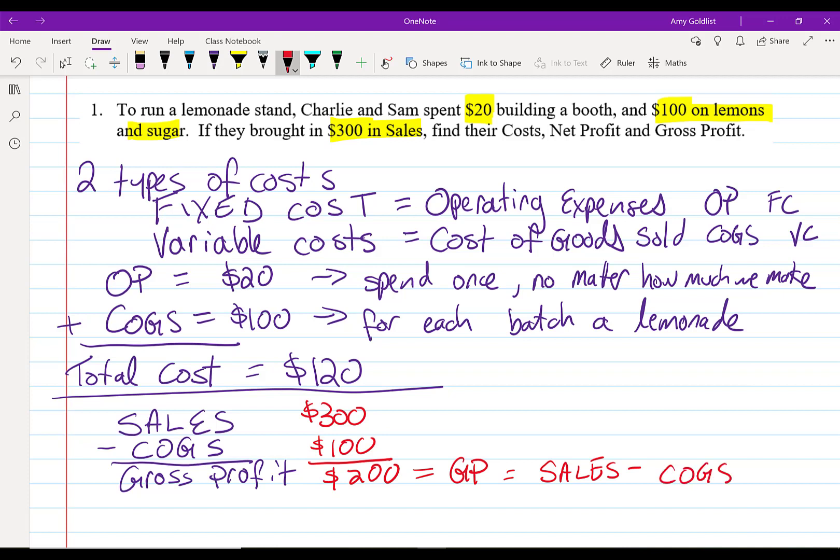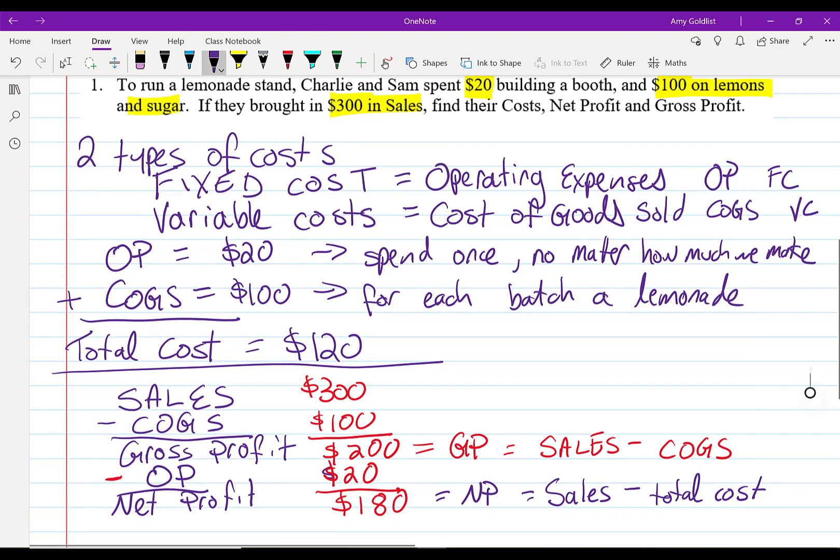That's the gross profit. And it is sales minus cost of goods sold. Now we're going to subtract those operating costs. So we spent $20 on that booth. And at the end, what we're going to get is $180. And that is our net profit. Net profit is going to be all of our sales minus all of our expenses. $180 is how much money we end up with in this.